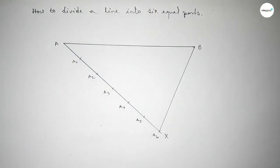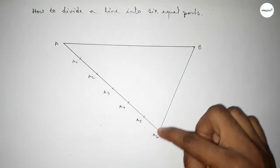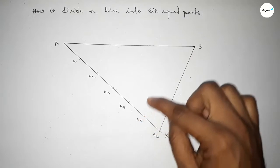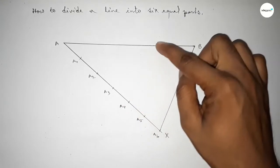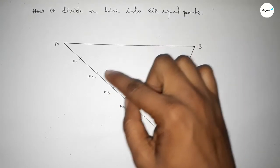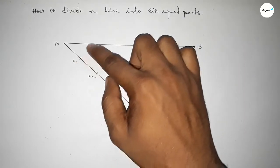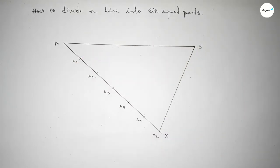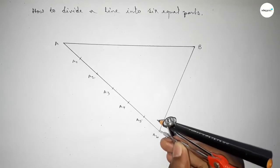Now joining A6 and B. Next we have to draw parallel lines at points A5, A4, A3, A2, and A1, parallel to the line A6B.